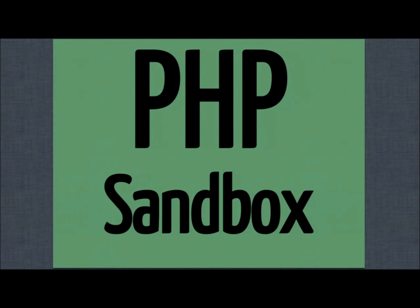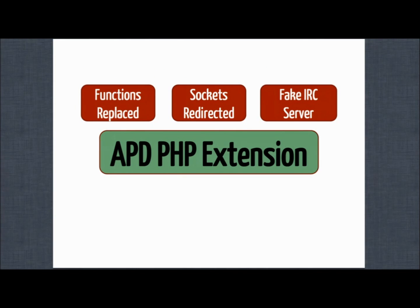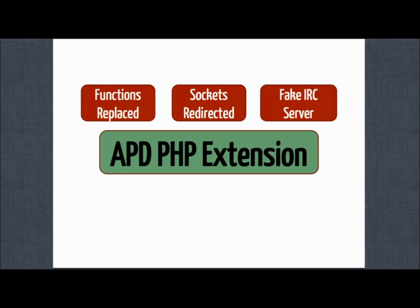Now we've collected an attack — for example, a PHP bot in our honeypot. We want to analyze it, put it in a sandbox. I wrote a little PHP sandbox which is basically an APD PHP extension. This makes you able to rewrite and replace built-in PHP functions. For example, you can replace the function that opens a socket, and redirect the bot's connection to your local IRC server — so the bot connects to your local server. You say to the bot, you're connected. The bot says, I want to join this channel with this password, this is my nick, this is my username. Sometimes they even send you the server password. So you get all the information about the botnet — important for the third step.